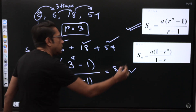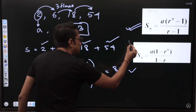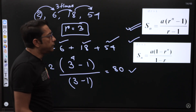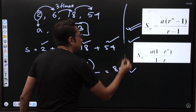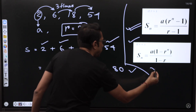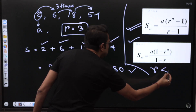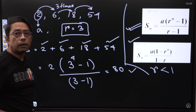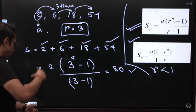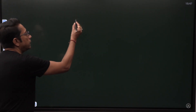Now when will the other formula apply? That formula applies when R is less than 1. The formula becomes reversed — instead of R to the power N minus 1 over R minus 1, it uses 1 minus R to the power N over 1 minus R. Let's verify this on the next example.